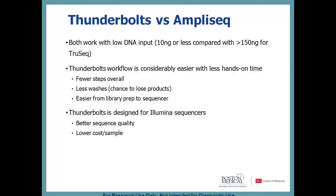We like the fact that Thunderbolts is designed to give data from Illumina sequencers. Based on PGM sequencing — though I don't know about Proton — I think we're going to see a significantly lower cost per sample, which will certainly help us as an academic lab dependent on NIH funding.